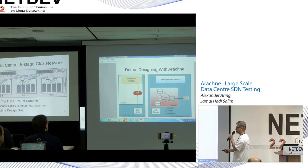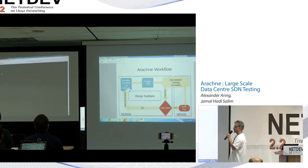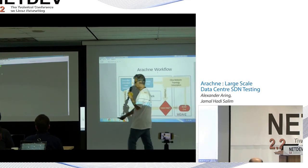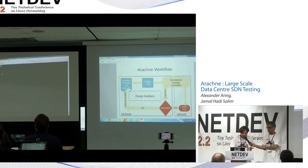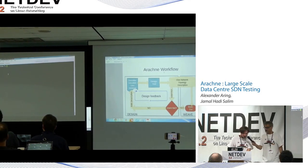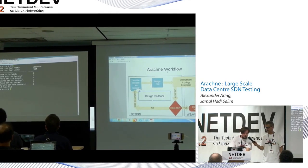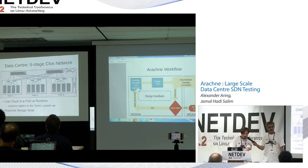So Alex will show the demo. I hope the demo gods are going to help us out today. What Jamal already mentioned is that we have two phases. The first phase is the design phase. For example, I started Arachne — here's the Arachne shell — and we can type some commands inside. For example, 'show.' And you can see the zone ID, the number of zone switches, which are the top switches.